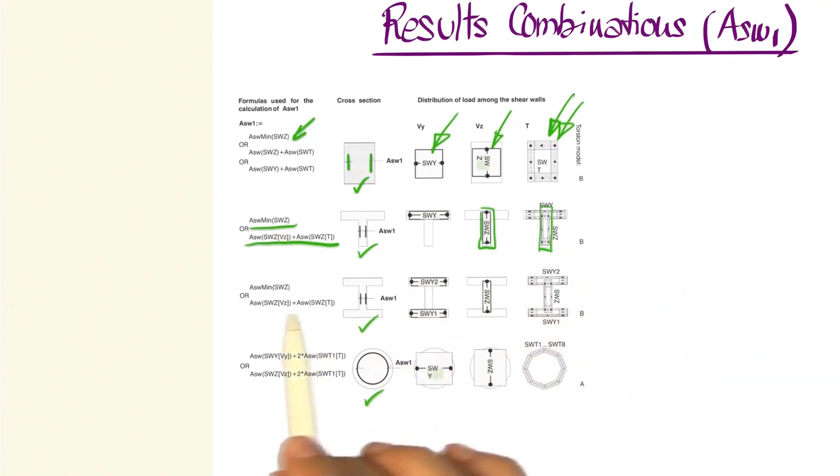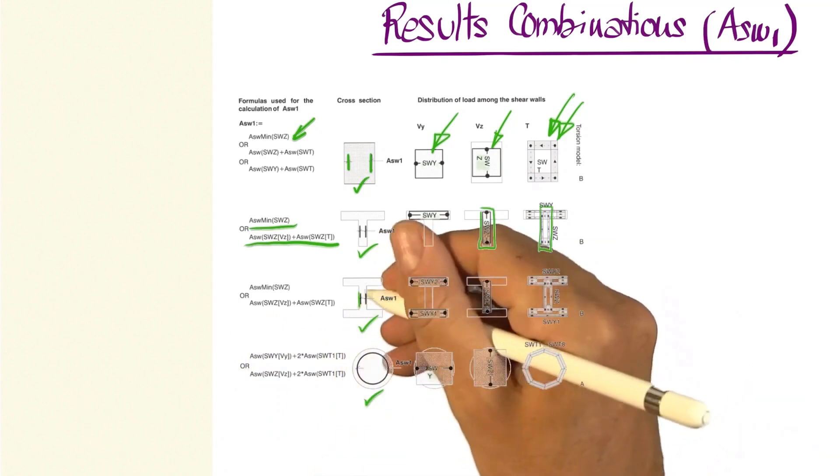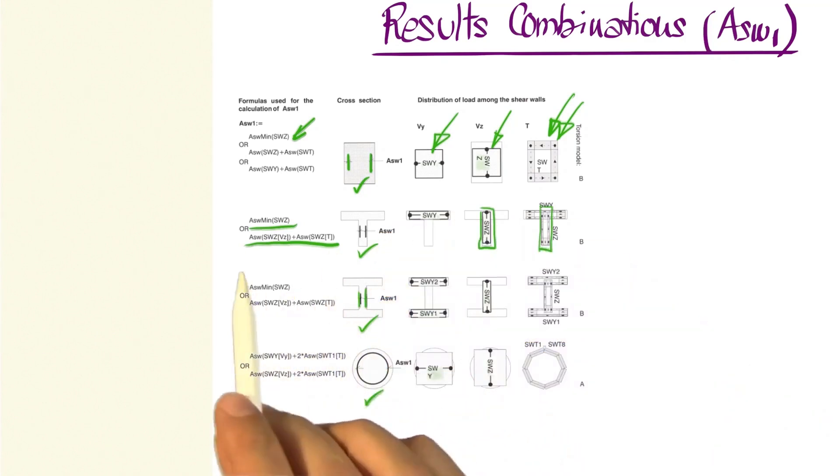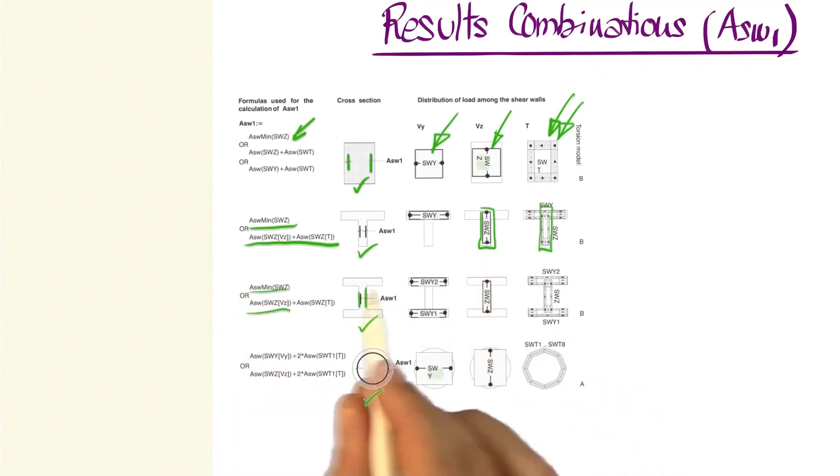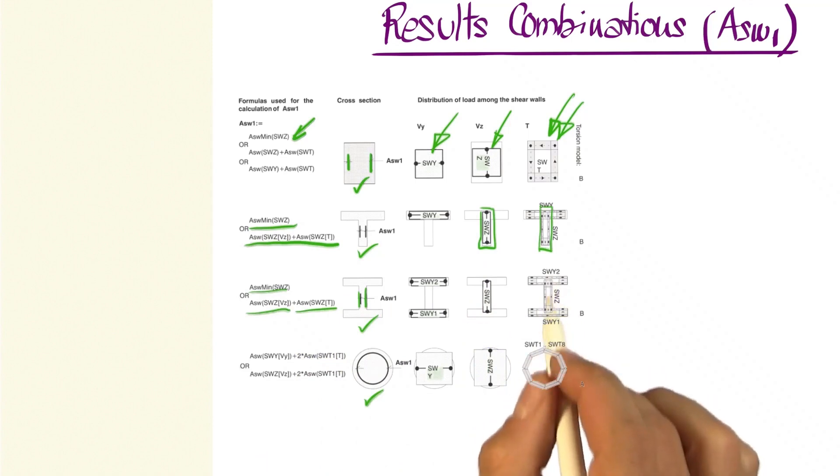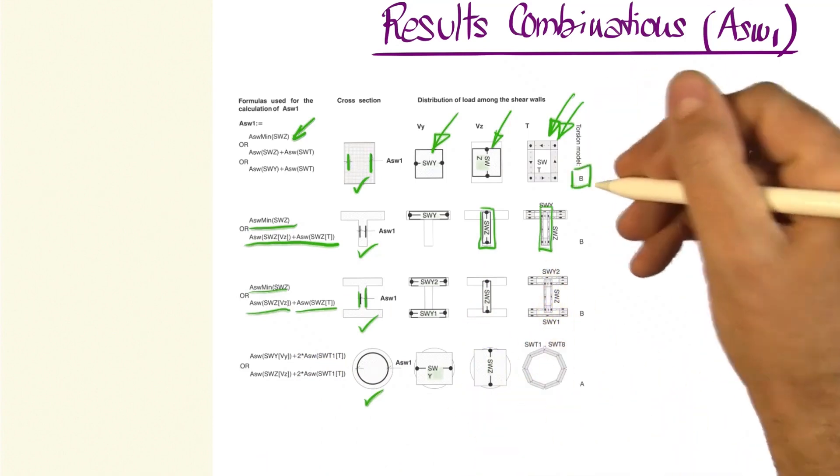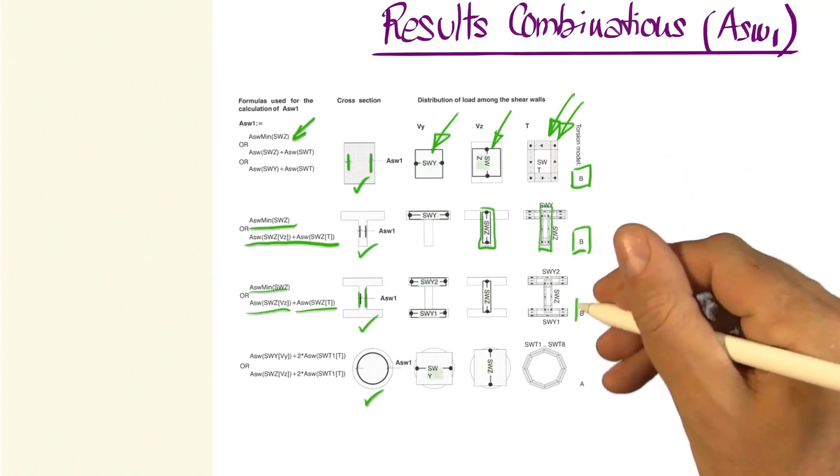The next example shows how we can get the reinforcement necessary in the web, which is the minimum steel reinforcement ratio, or that which corresponds to the shear wall for shear force in Z, plus the reinforcement corresponding to the shear wall for torsion. In this area, we can observe the torsion model that is being used for each case.